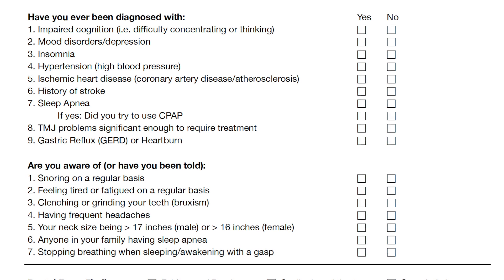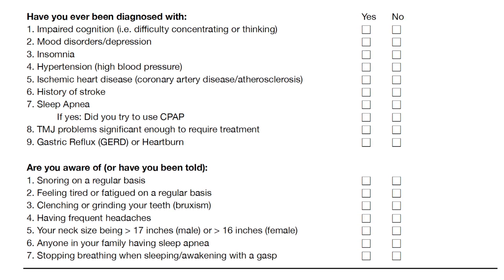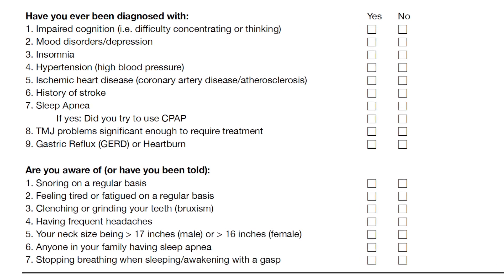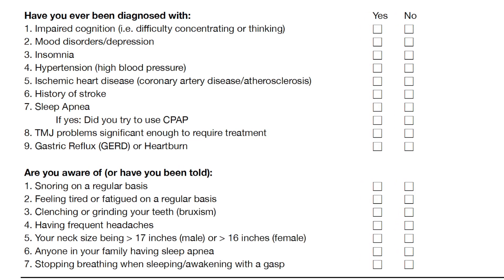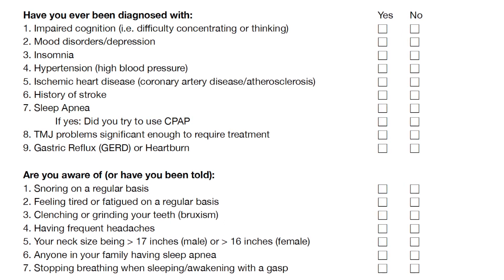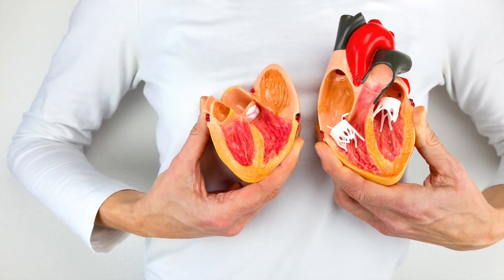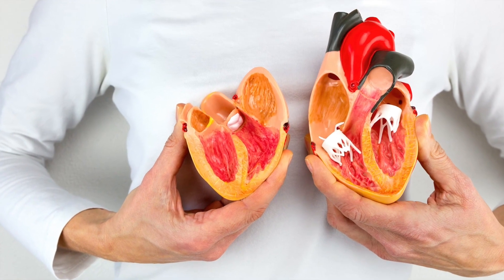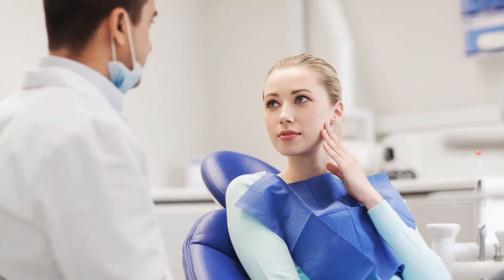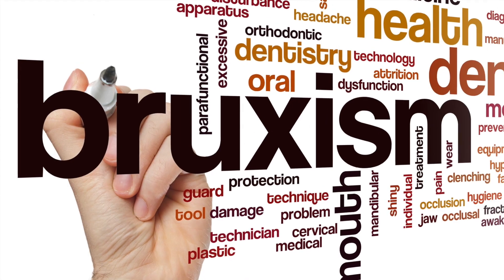The next part of the form asks the patient if they have ever been diagnosed with a variety of conditions and asks them if they are aware of any presented signs or symptoms. Knowing if the patient has ever been diagnosed with depression, insomnia, or previously diagnosed with sleep apnea is essential — these are all potential signs of a problem. Untreated sleep apnea can lead to cardiovascular issues such as hypertension, heart disease, and stroke. TMJ pain has long been associated with nighttime bruxism, which is also associated with sleep apnea. Gastric reflux has also been linked to sleep apnea and is something you should ask about.